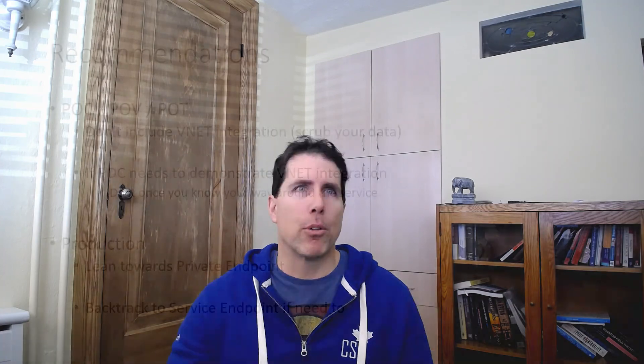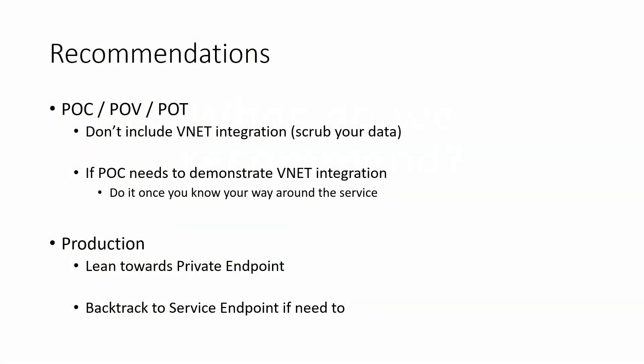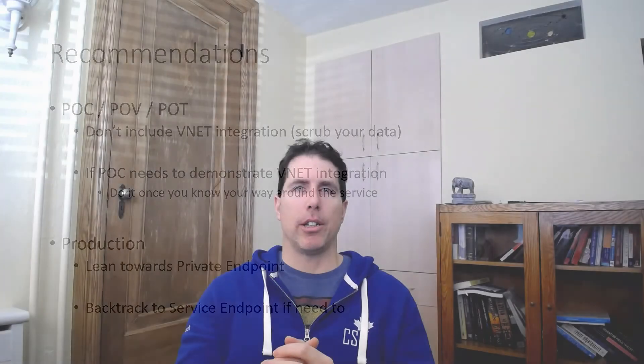If you're doing a POC, proof of concept, proof of value, or proof of technology, I wouldn't include VNet integration at first. Get a hang of the service first — for example, Azure Synapse Analytics. Then if your POC needs to include networking, do that as a second step. Once you put in VNet integration, whether service endpoint or private endpoint, chances are things will stop working if not configured properly. It's better to already know the service when that happens. For production scenarios, I would lean toward private endpoint as my default choice, falling back to service endpoint only if needed.